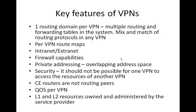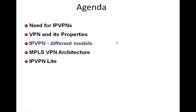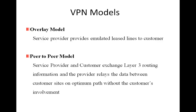Layer 1 and layer 2 resources are known and administered by the service provider. There are typically two models of IP VPN that a service provider can adopt. One is the overlay model, where the service provider provides only emulated leased lines to the customer. The second is the peer-to-peer model, where the service provider and customer exchange routing information and the provider routes data between customer sites along the optimum path without the customer's involvement.